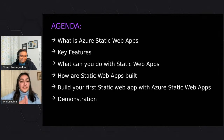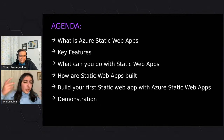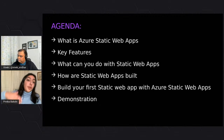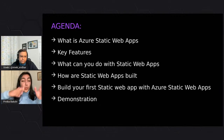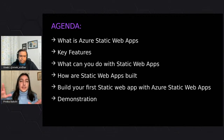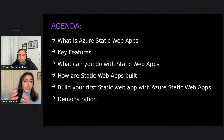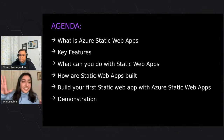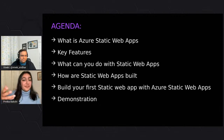Today's agenda: first, we'll talk about what a web app is and what makes Azure Static Web App unique. After that we'll cover some key features — how it differs from other applications, what you can do with Static Web Applications, how to build your own, and then some deeper applications covering frameworks and what happens at the backend. We'll also make our own Static Web App with a live demo at the end.